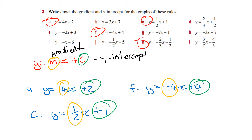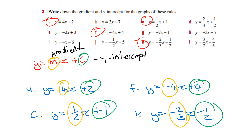For K: y equals negative two-thirds x minus one-half. In this case, our gradient is minus two-thirds, and our y-intercept is minus one-half. So you need to write those as the gradient and y-intercept — that's how you work it out just from looking at the rule.